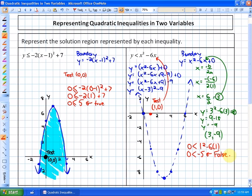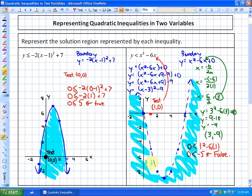The answer to this is false. So in this particular case, since it's false, we would shade the opposite of where the test point is, which is the outside of the parabola.